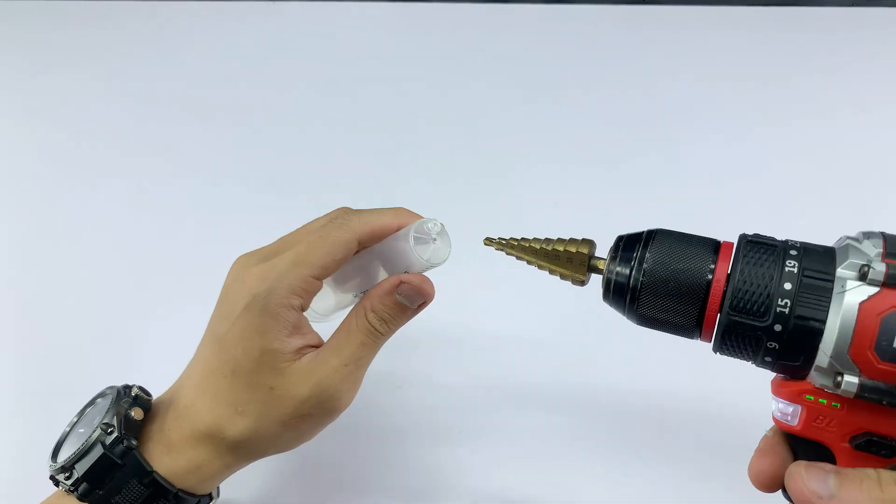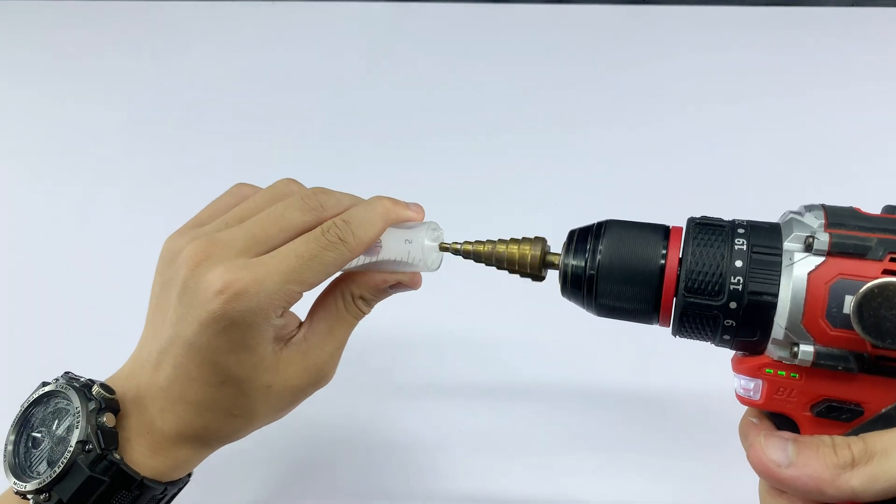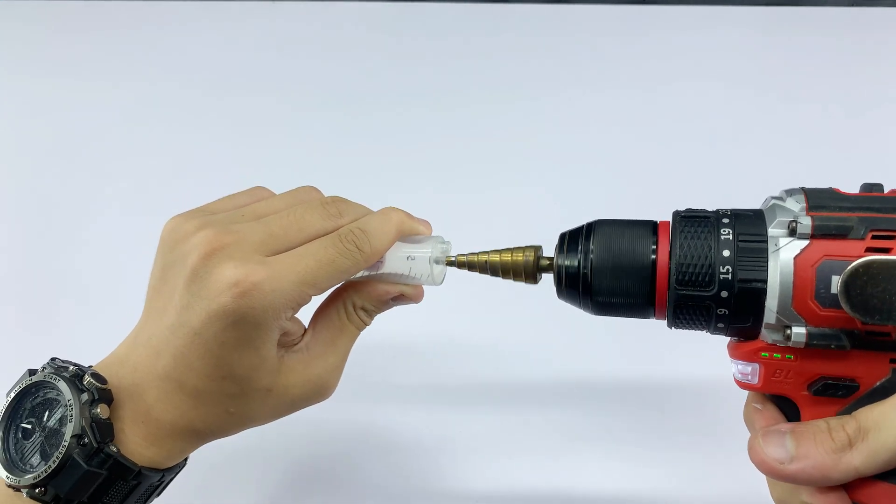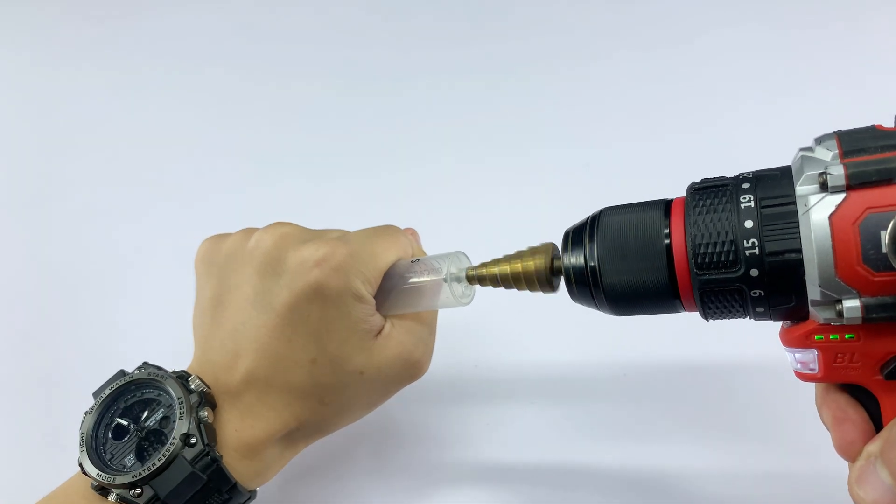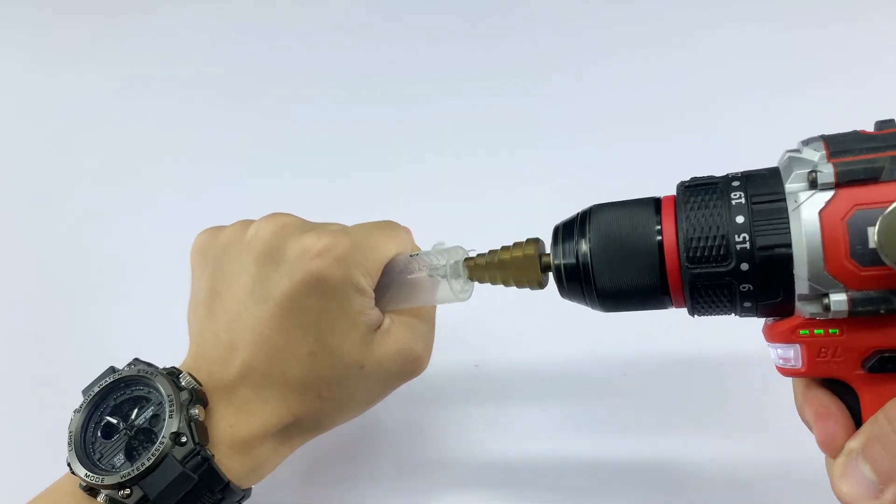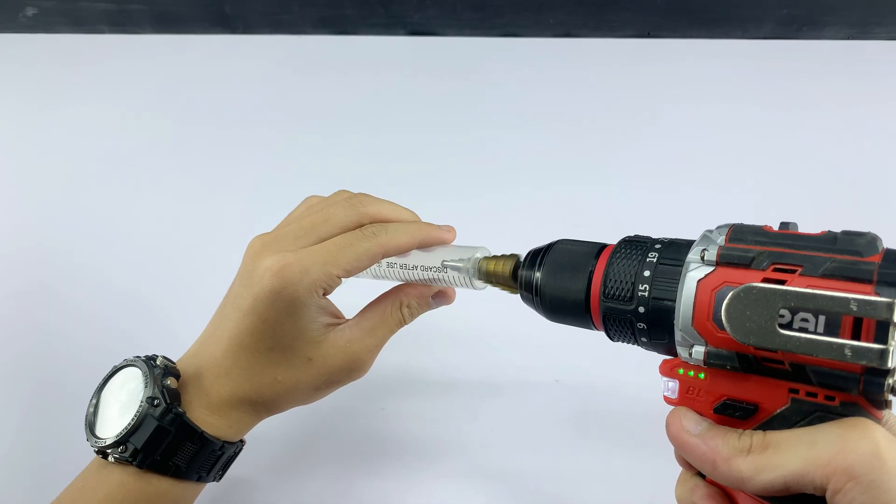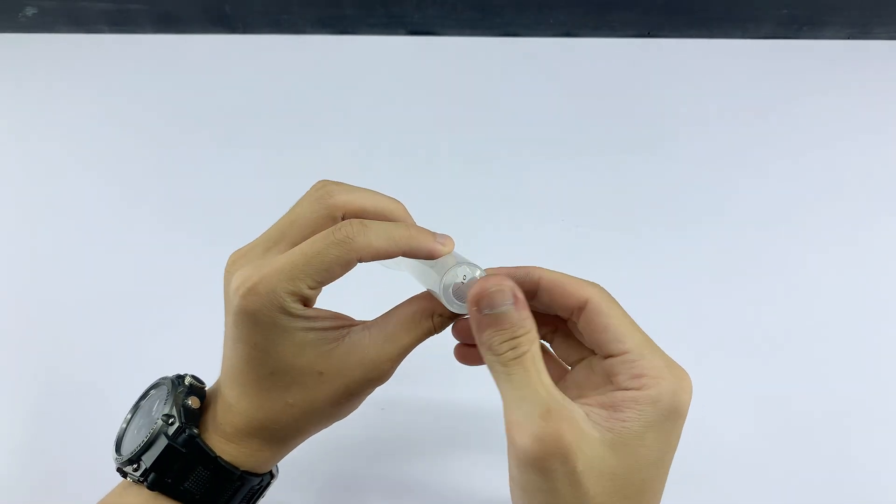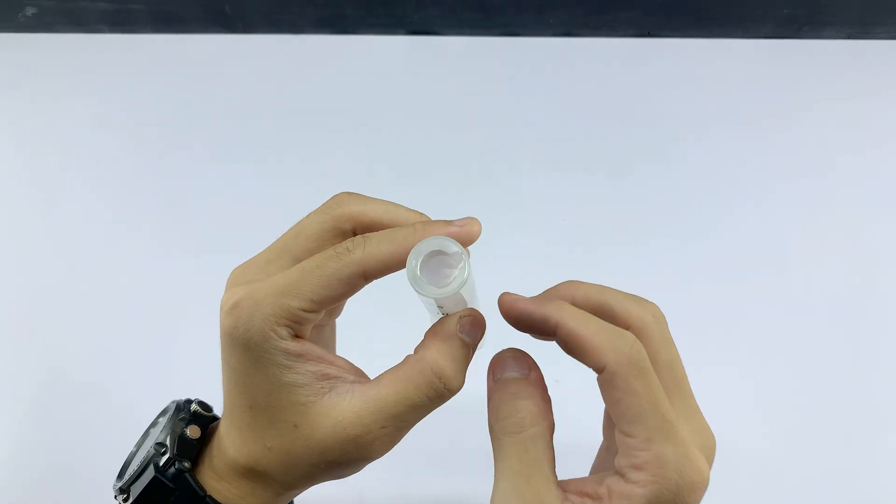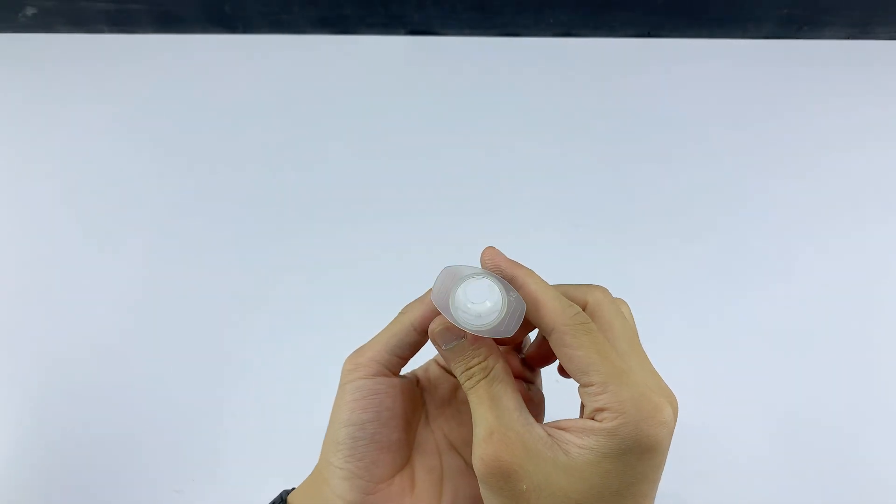To create a wider and more uniform opening, I'm using a step drill bit attached to a cordless drill. I'm gently pressing the syringe tip against the rotating bit, gradually enlarging the hole. This is going to be the housing for our new tool.